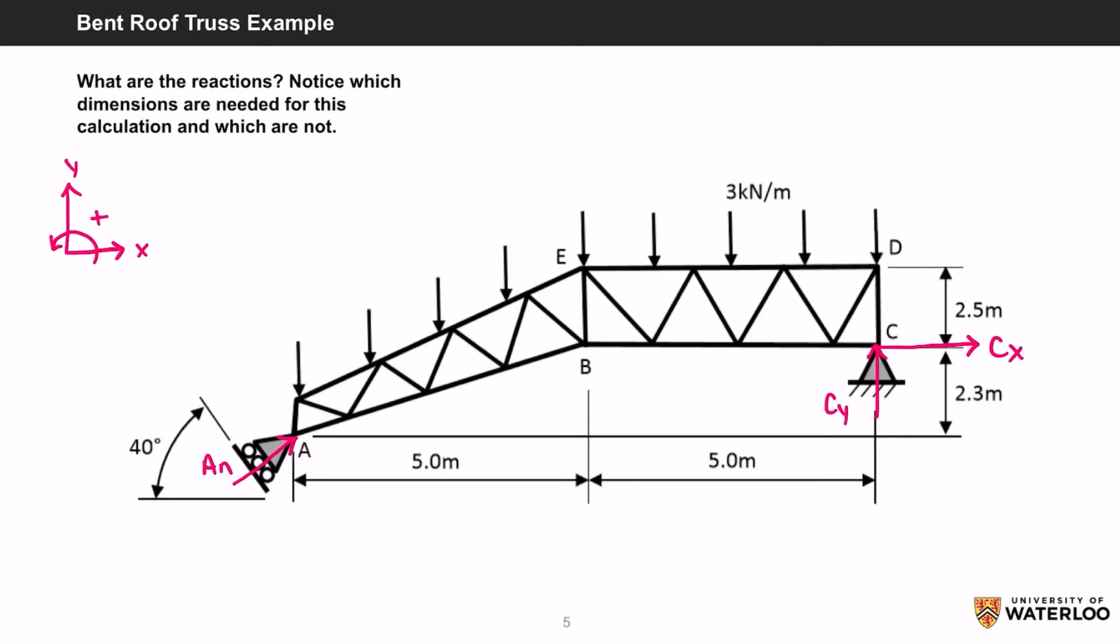Let's also turn that distributed load into a point load by taking the force applied, which is 3 kN per meter, times the distance it spans, which is 10 meters, giving us 30 kN. Replace it at point E because it's the center of the distance.